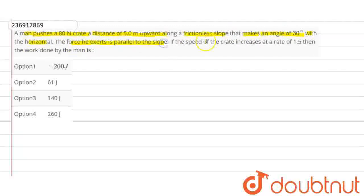It is parallel to the slope. If the speed of the crate increases at the rate of 1.5, then you will be told that it is done by the man. How much work is done by the man? You will be asked for the question. So, the first point of our question is, I will try to understand the figure.